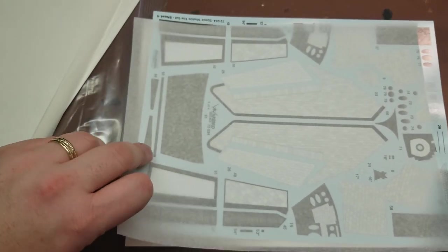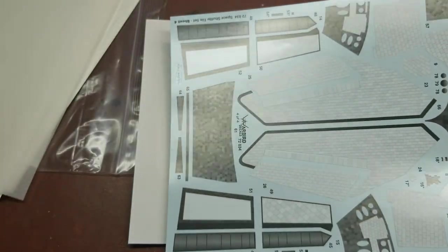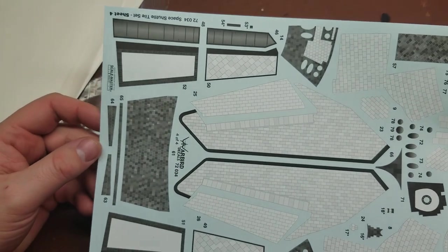And then the last sheet here which is your vertical tail fin and some of your nose here.